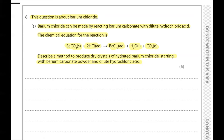We heat the filtrate to evaporate some of the water until it reaches its crystallization point at that temperature, then leave the concentrated solution to cool so that it crystallizes. Once crystals form, we filter the crystals from the solution and leave them on the filter paper in a warm dry place so that the crystals dry. We then obtain pure crystals of barium chloride.